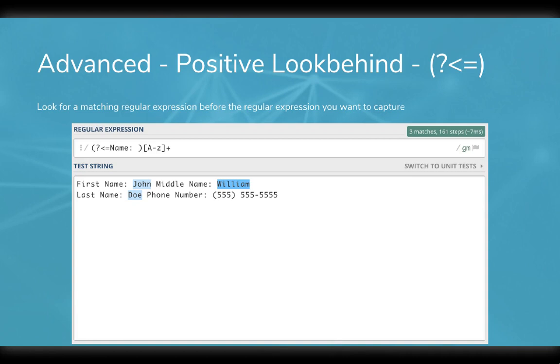In this example, we only want the uppercase and lowercase letters that immediately follow name, colon, space. A positive look behind has a structure of open parentheses, question mark, left caret, equals sign, then the regular expression of what precedes our text that we don't want to capture. In this case, name, colon, space. Then we put a closing parentheses and then the regular expression of what we actually want to capture.